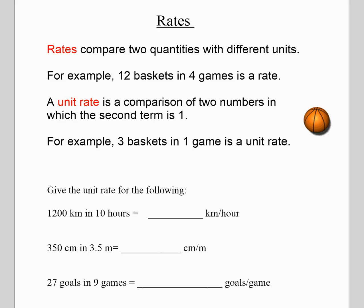This video reviews what rates are. We talked about these at the beginning of this unit. Remember that rates are comparing things that have two different units. For example, when you're on the highway and you see the posted speed limit, 100 kilometers per hour, that is a rate. So 12 baskets in four games, that's a rate.